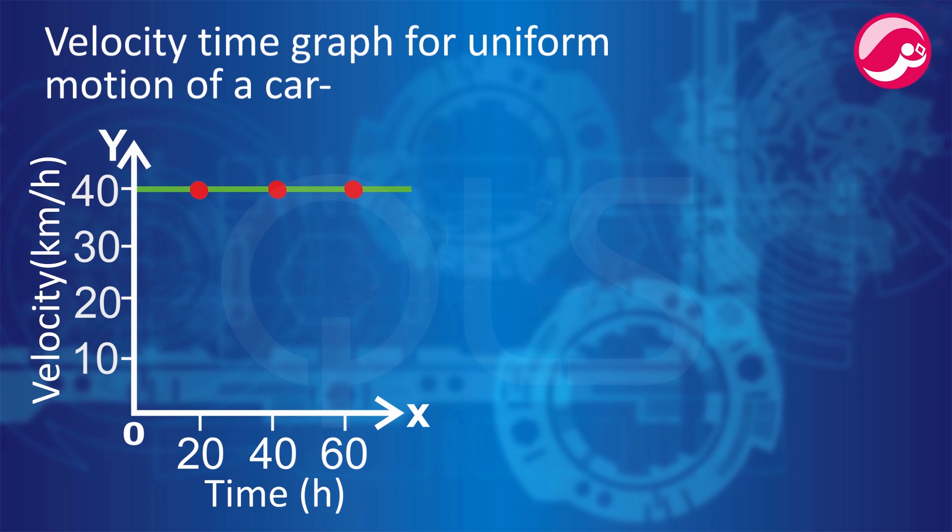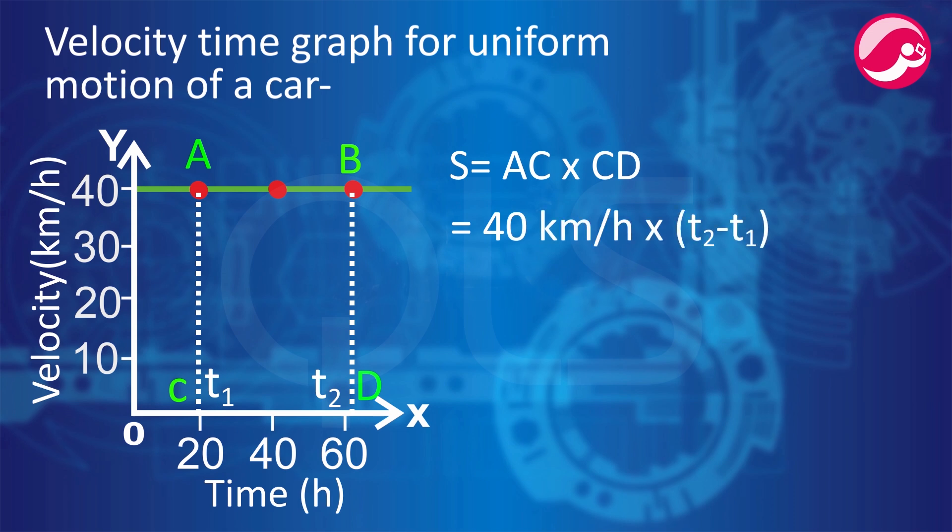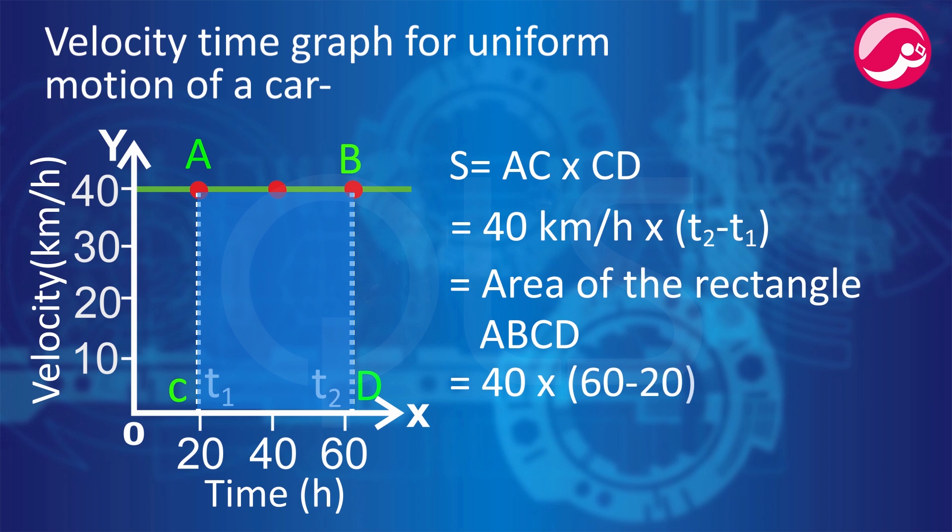This is a graph of uniform velocity. Now if we want to know how much distance is covered between time T1 and T2, let's see. Mark T1 and T2 as C and D. Now draw perpendicular lines where they intersect, mark them A and B. Now distance S will be equal to AC into CD. AC into CD will be 40 km per hour into T2 minus T1 and that will equal area of the rectangle ABCD. The blue shaded region will be ours. So you understand how we calculate time, distance, velocity, all the calculations?